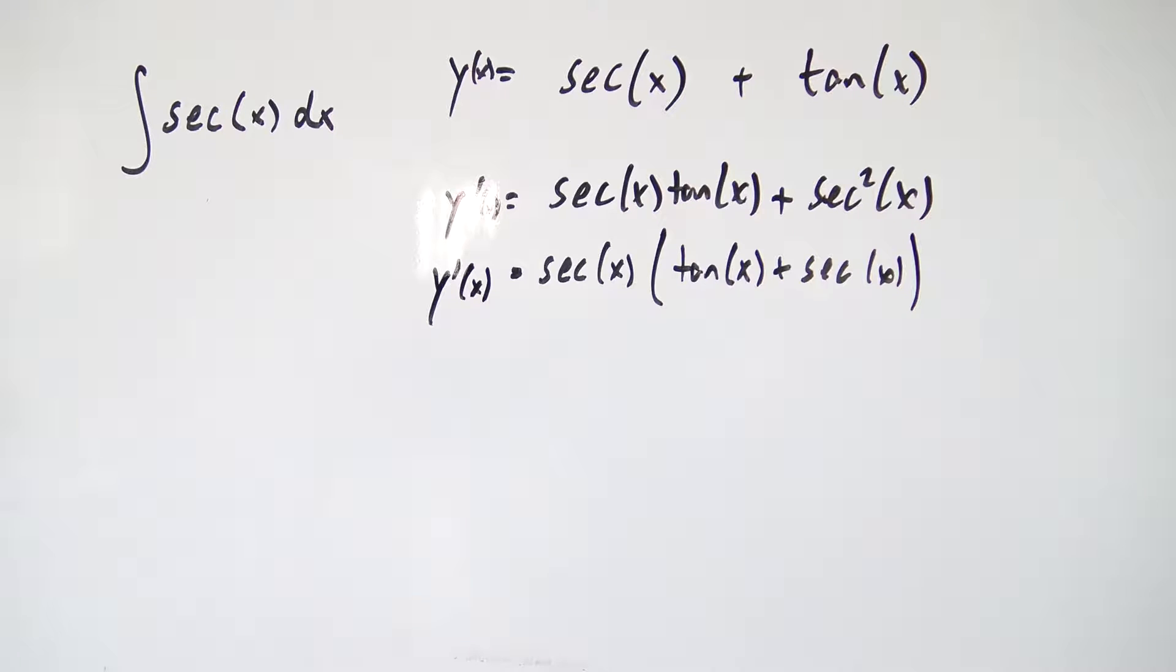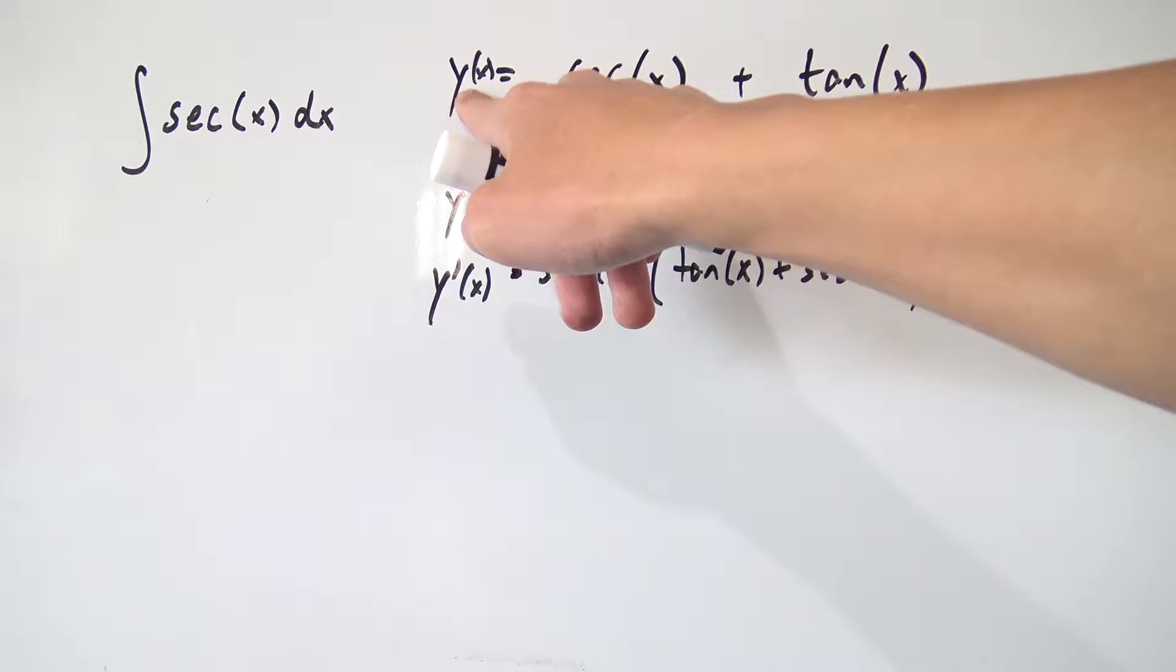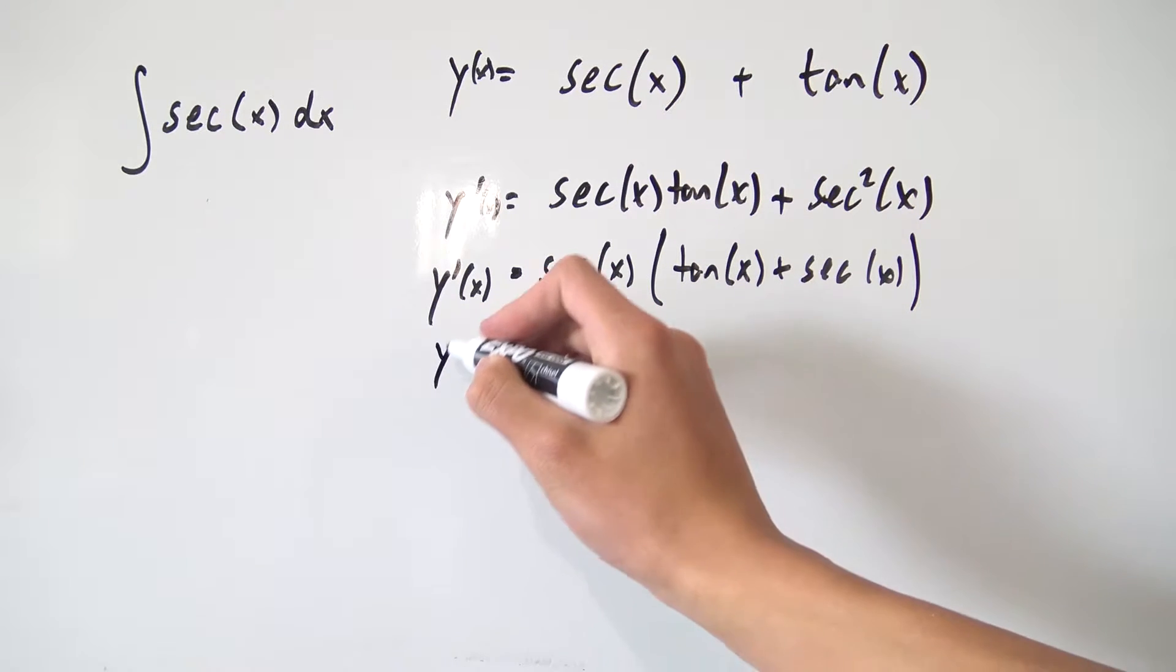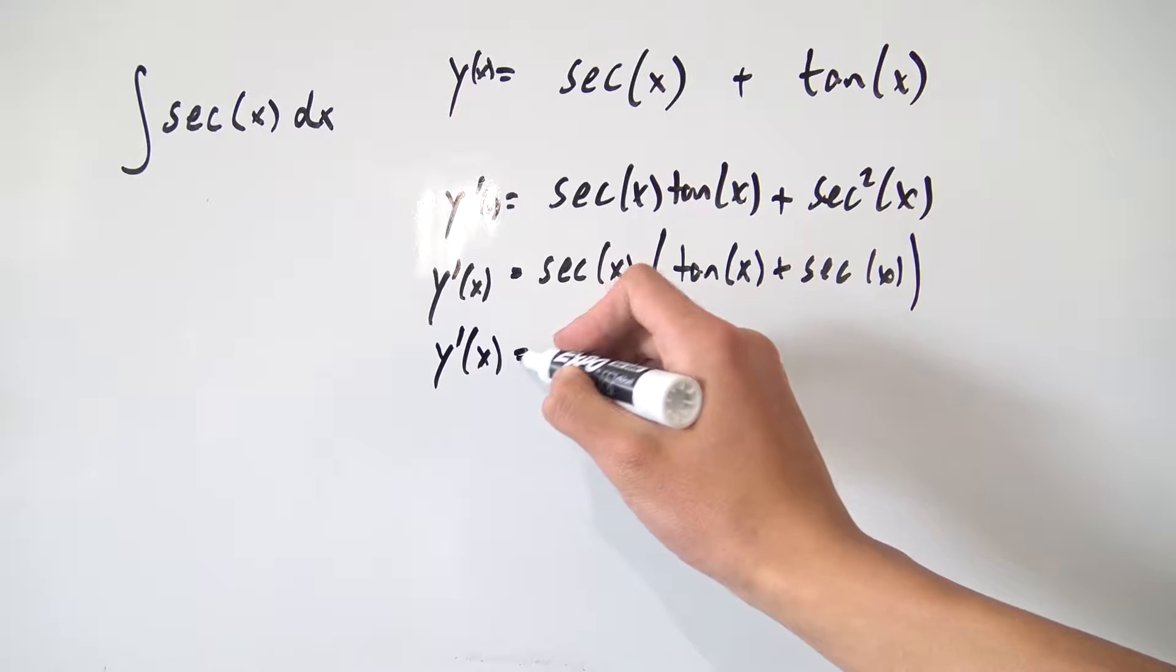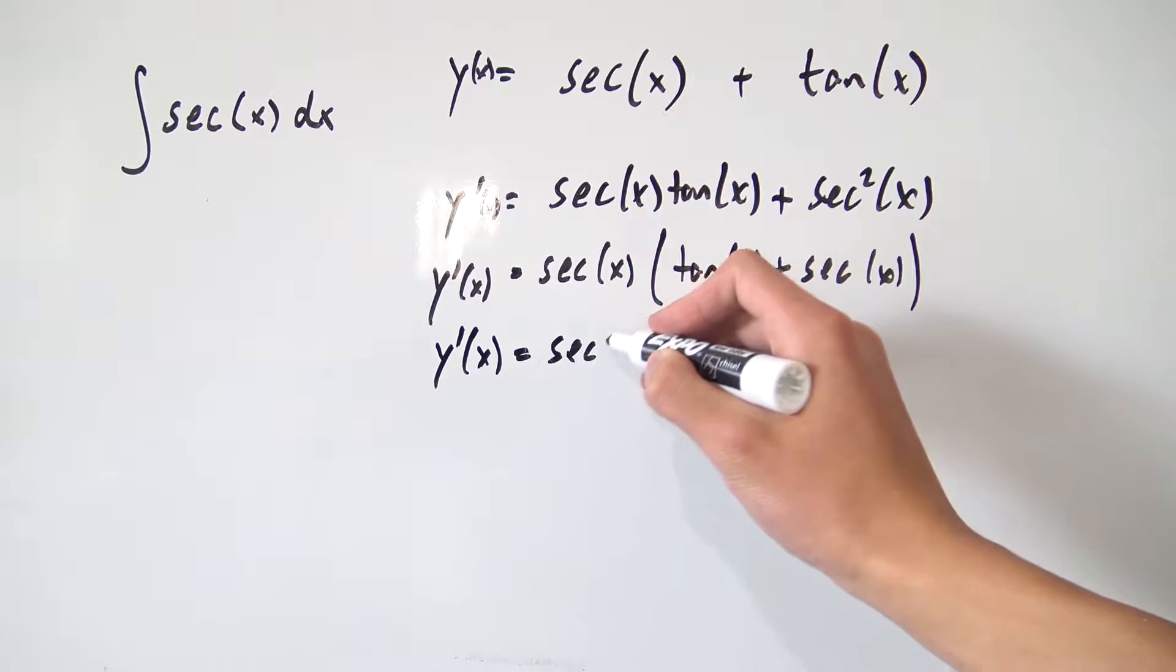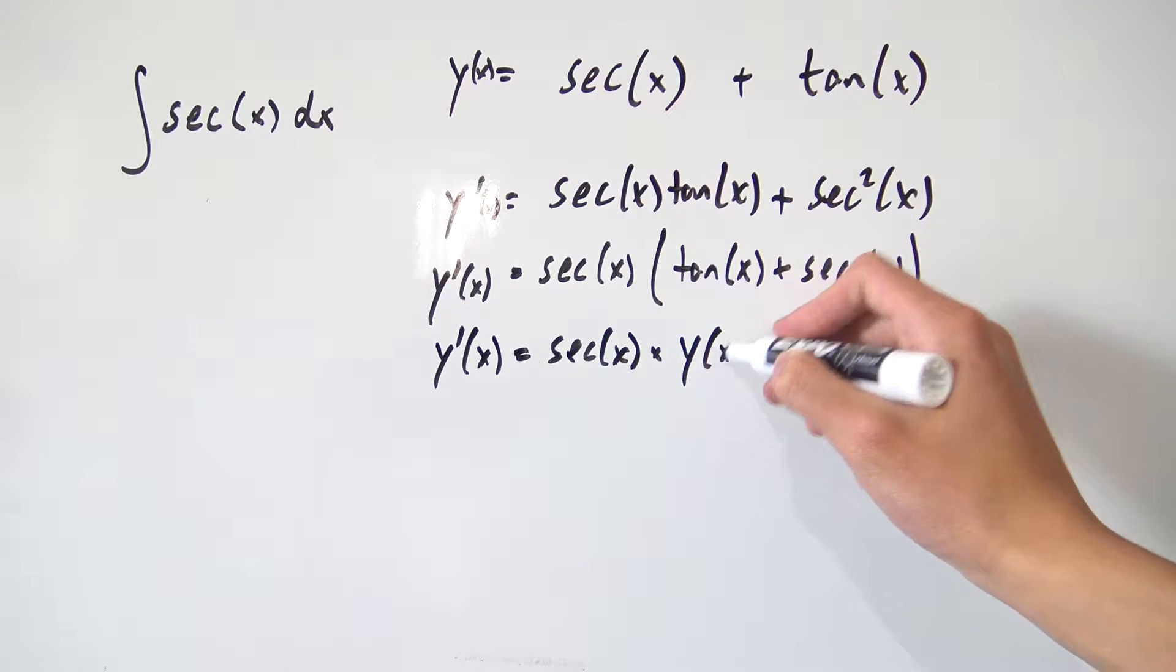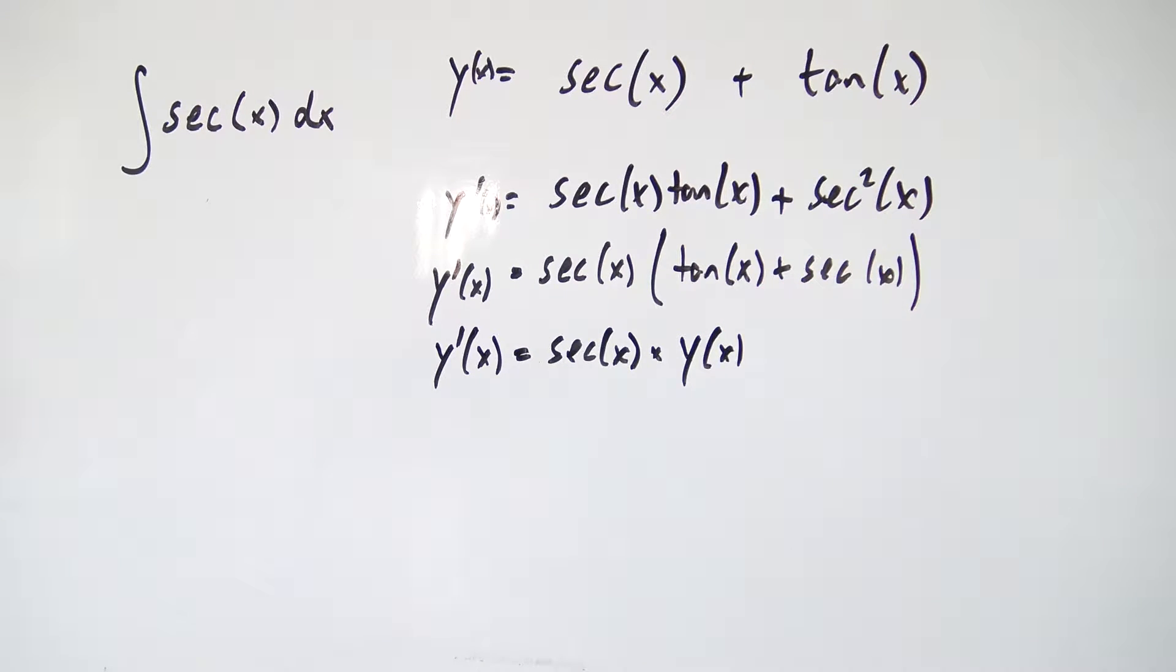And notice one cool thing. We have a secant of x, but what's more interesting is this part right here. We have tangent plus secant. And isn't that just our original y of x, secant plus tangent, just the other way around. So we can actually rewrite this as y prime of x being equal to secant of x times y of x.